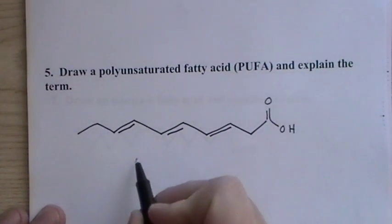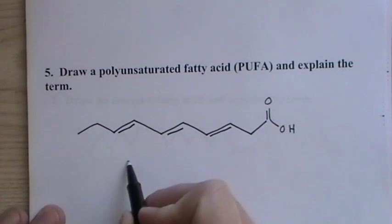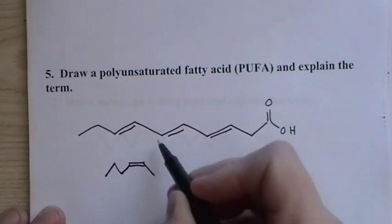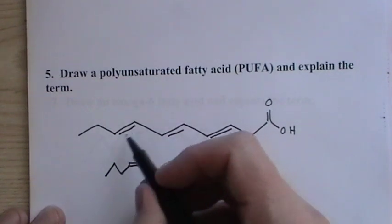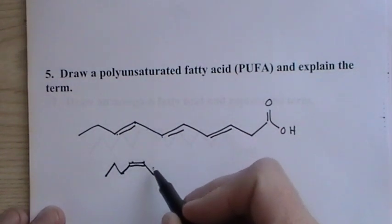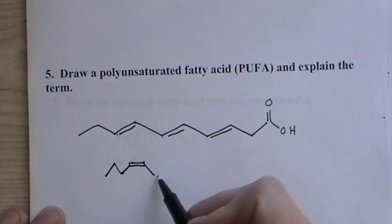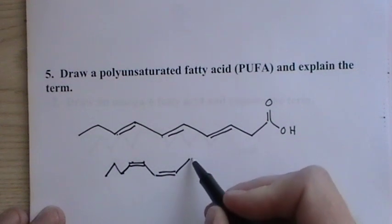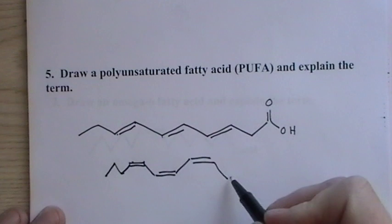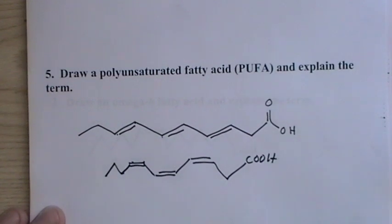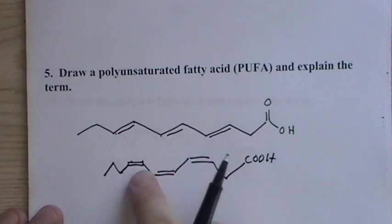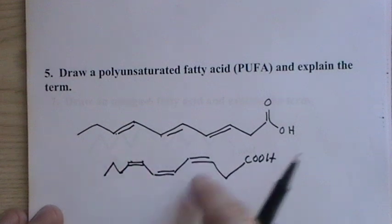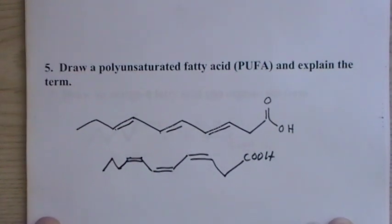Whenever we see a double bond, normally we have to take into account that these are going to have that cis formation. Normally, you don't have them this close, so there's space. We'll see later on that if we draw this out, the double bonds all will be on one side rather than back and forth like this.